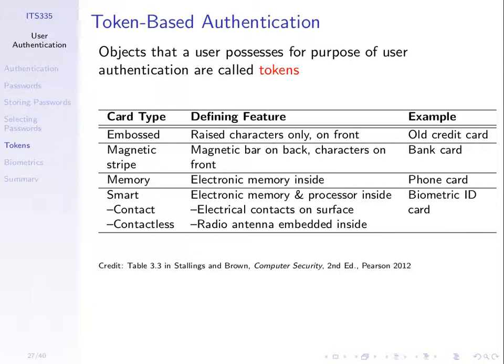Some are contact smart cards where you need to touch them with an electrical contact. Some have a radio device embedded so that we can be nearby. You can think of features of mobile phones like NFC — Near Field Communications — a technology that allows you to have your phone within a few centimetres of a reader, and that can exchange information and be used for authentication. In that case, your phone is acting as a contactless token. You don't have to touch it, you just have to be nearby.